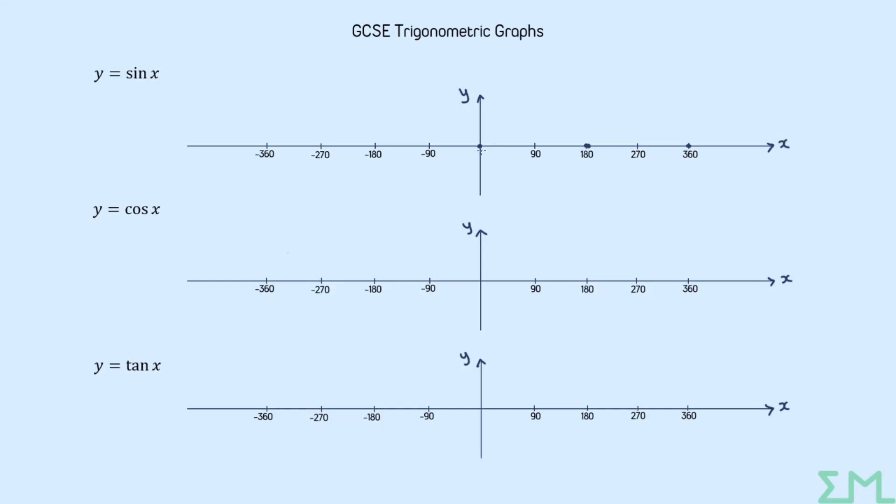The sine function can only take values between 1 and negative 1. It reaches its maximum for the first time at 90 degrees. It reaches its minimum of negative 1 for the first time at 270 degrees.